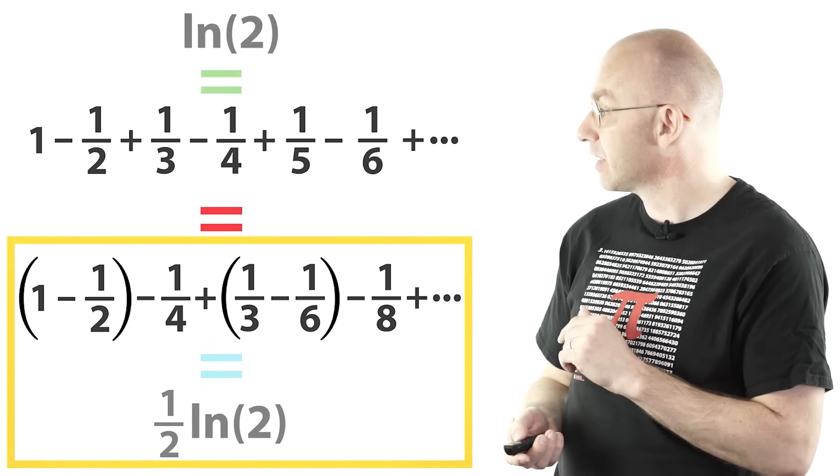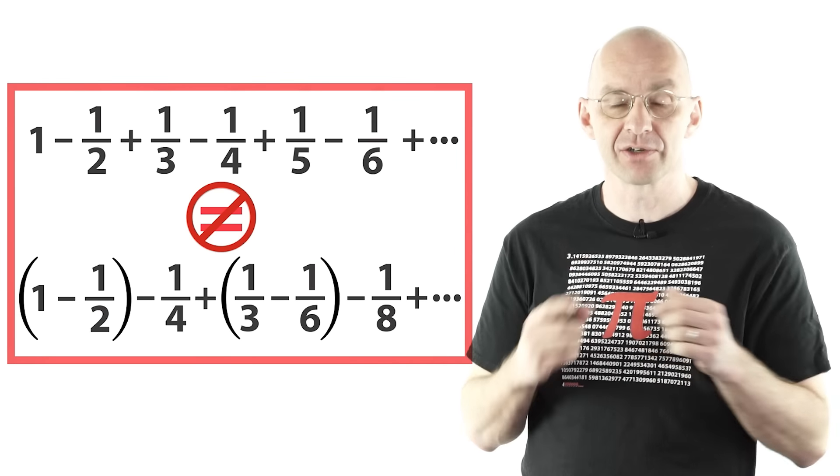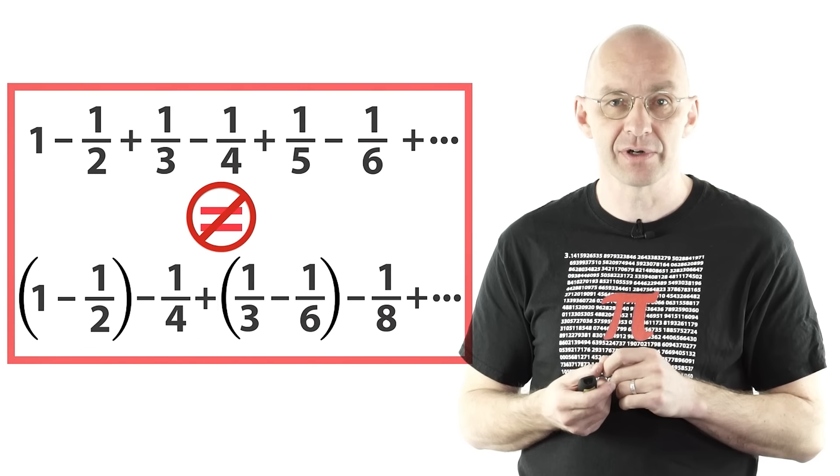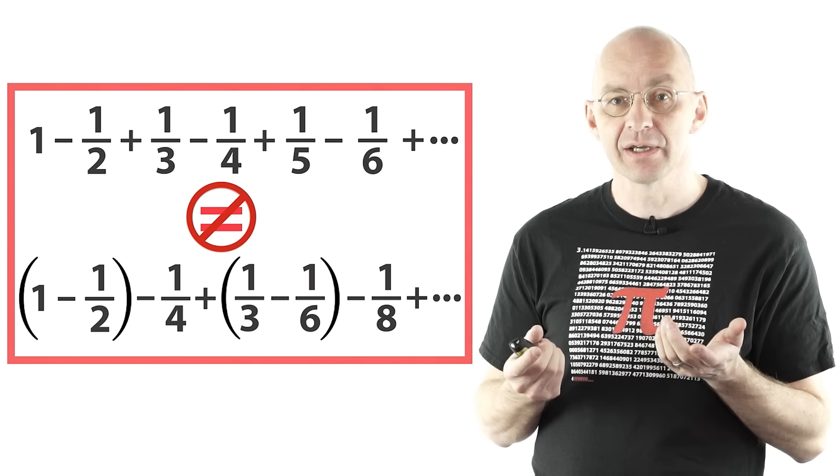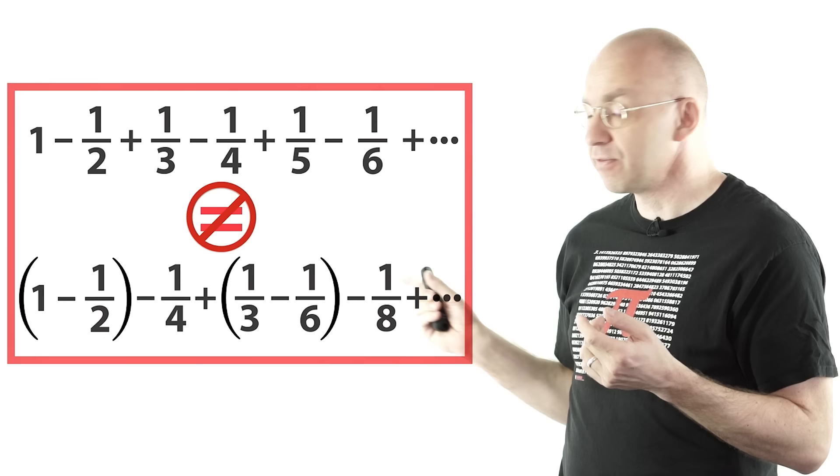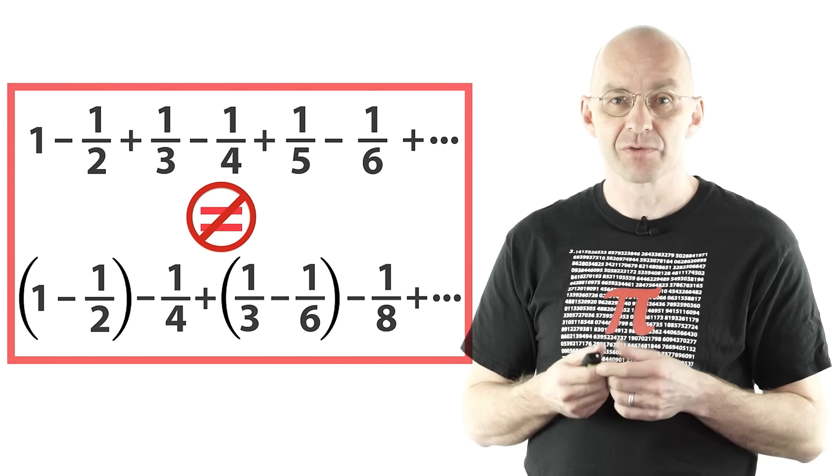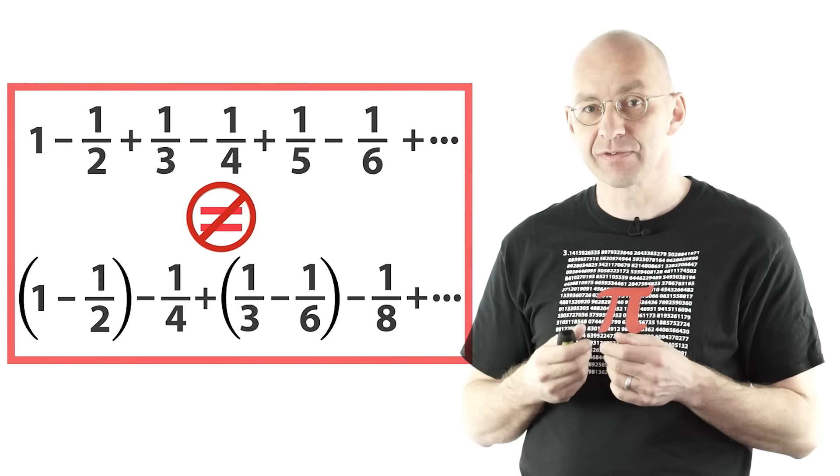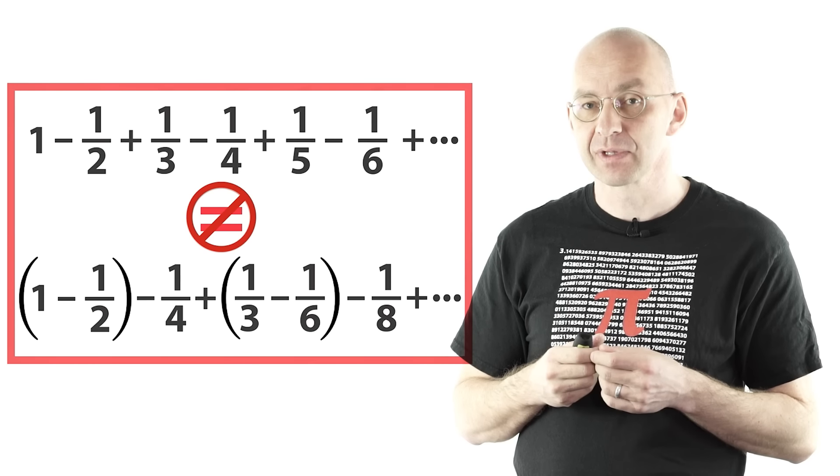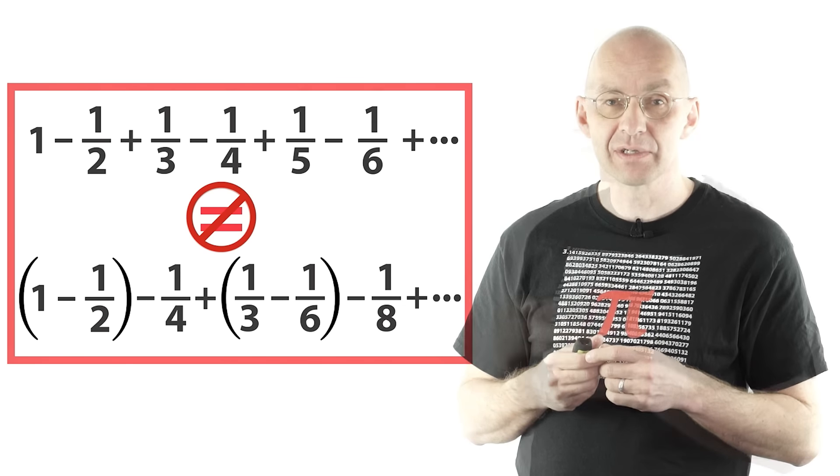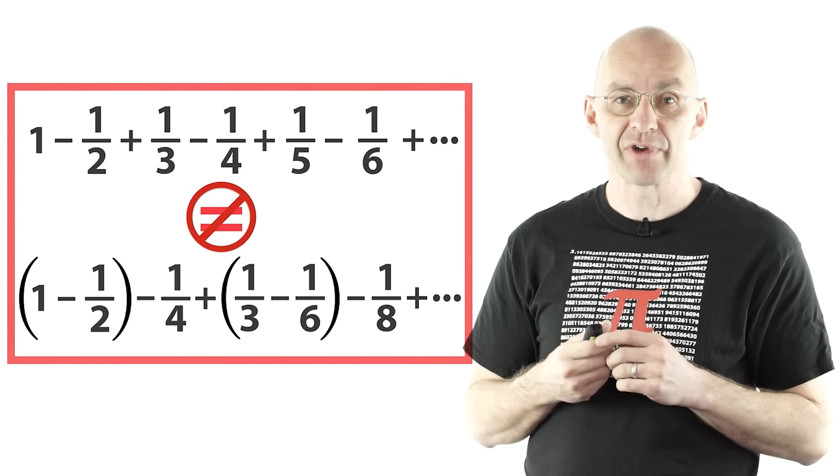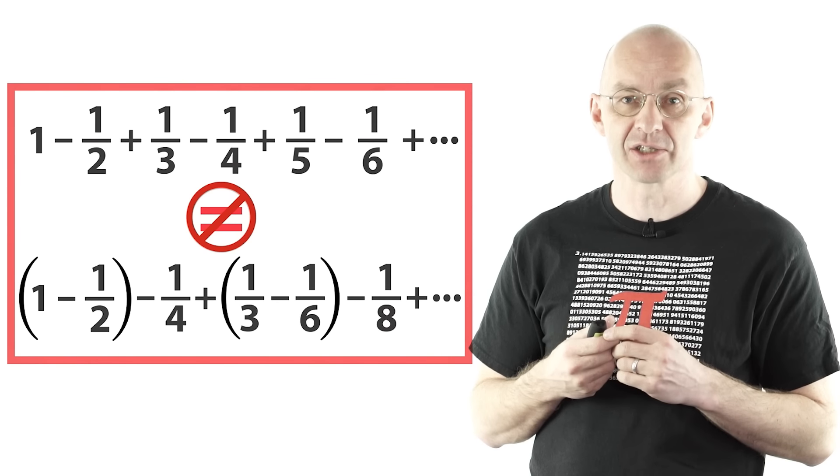So what's really messing things up is that we are rearranging the terms. We're changing the order of the terms and that really creates an infinite series with a different sum than the one before. So basically when we're dealing with these infinite series, unlike with the finite ones, order matters. Rearranging the terms may change the sum.